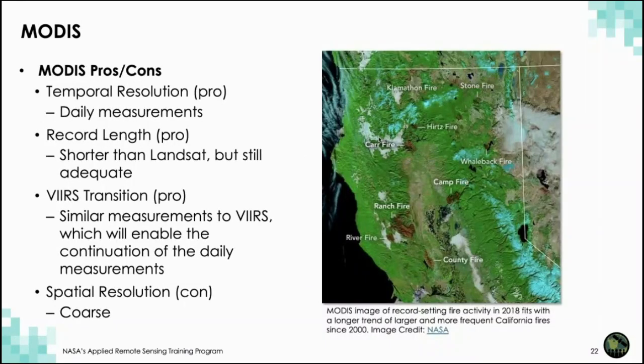The greatest benefit of MODIS is the daily imagery. While MODIS data are only available back to 2000, similar measurements will continue with a new sensor called VIIRS. The greatest downside to MODIS is the coarse spatial resolution, which can make it difficult for mapping fine-scale landscape dynamics.